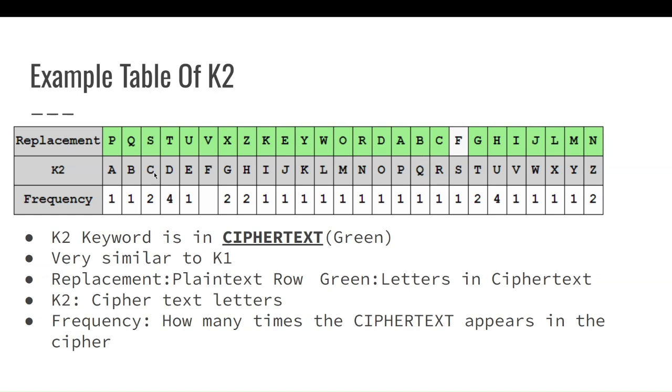Now it's similar to K1 because the keyword both you have to put into the replacement row where it's put into right here, the keyword, and then it continues on the same way, A, B, C. You skip D and E since they're in our keyword, and then you go to F.